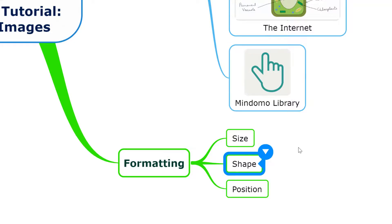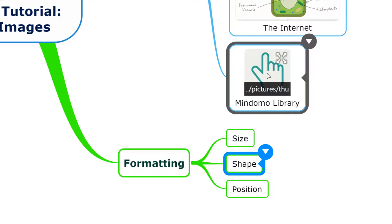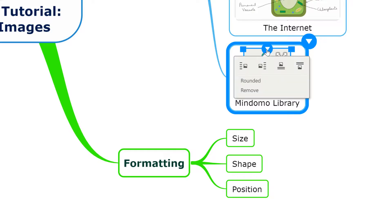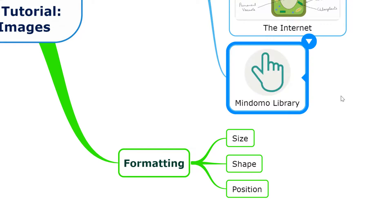Another option we've got to format the images is to change the shape of the image. Once again, we click the topic, we click the shape itself — you'll see you've got this little triangle dropdown here — and we've got an option to make this a rounded image, and Mindomo does a nice job of rounding that off, just giving it a different appearance. Depending on the image, that may or may not be a helpful thing to do.